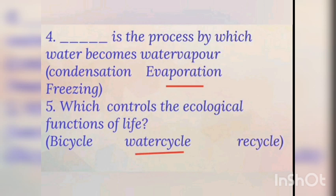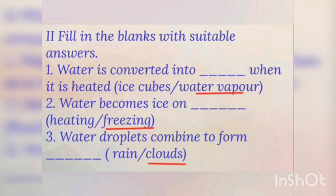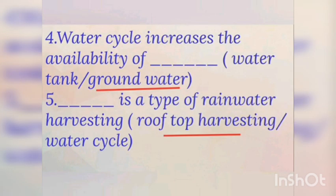Fill in the blanks with suitable answers. Water is converted into water vapor when it is heated. Water becomes ice on freezing. Water droplets combine to form clouds. Water cycle increases the availability of groundwater.